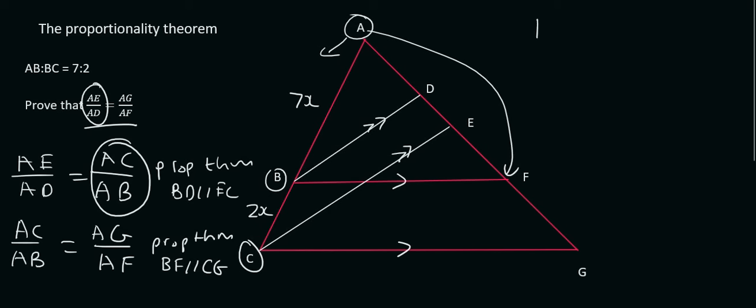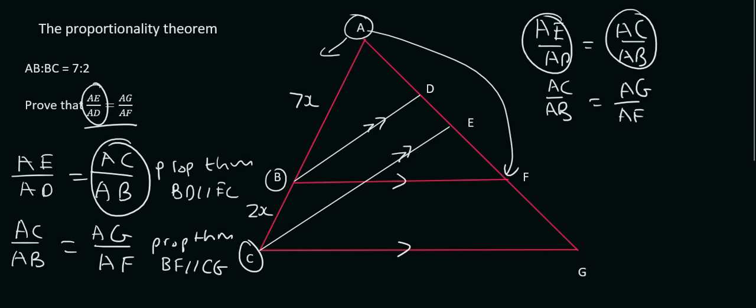We started off by saying that AE over AD is the same as AC over AB. Then we said that AC over AB is the same as AG over AF. So if this is the same as this one, but that same one is the same as this one, then that means that these two are the same.